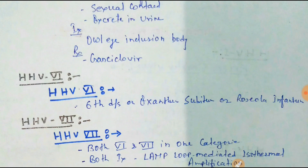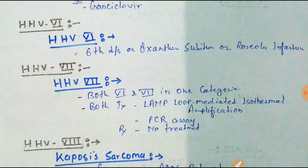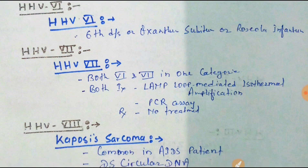Human Herpes Virus 6 and Human Herpes Virus 7 are grouped in the same category. HHV-6 causes sixth disease, also known as exanthem subitum or roseola infantum. Both HHV-6 and HHV-7 share the same investigations: LAMP (Loop-Mediated Isothermal Amplification) and PCR assay. No treatment is available, and none is required for either.